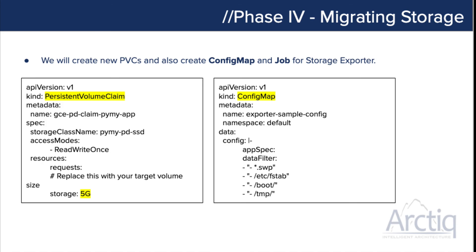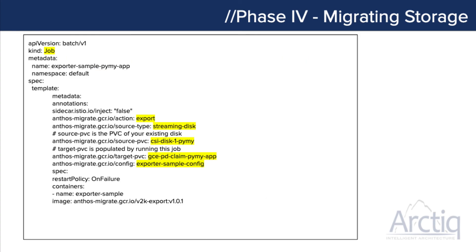One thing to keep in mind when defining storage volume size is future growth — make sure you size appropriately for database growth. In the config map configuration, you can specify which folder structures can be omitted during the migration since they're more relevant to a VM than a container. For the storage exporter job, we'll populate the values using 'export streaming disks', referencing our source PVC volume, the target new PVC, and the configuration, then apply these configurations to move on to the next stage.